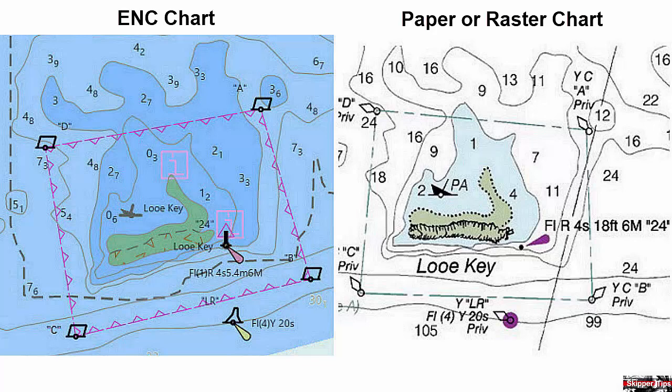Note also that the buoy descriptions on the paper or raster chart are slanted, and this means that the aid to navigation is floating or can be moved by wind, current, sea, or swell. On the ENC charts, all aids to navigation — whether floating or fixed — will have vertical letters, and this will be much easier to read in trying conditions such as low light or heavy weather.